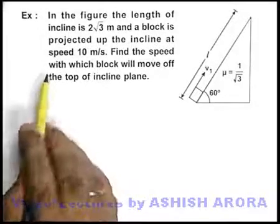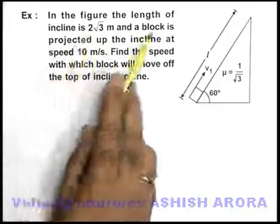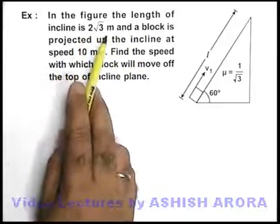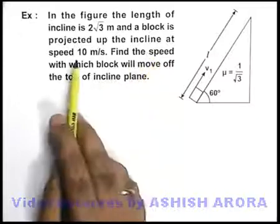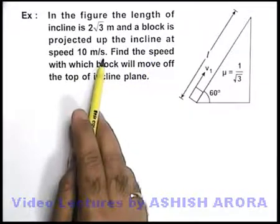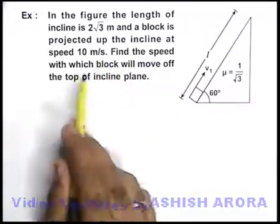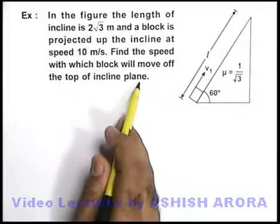In this example, we are given that in the figure the length of the incline is 2√3 meters, and a block is projected up the incline at a speed of 10 meters per second. We are required to find the speed with which the block will move off the top of the incline.